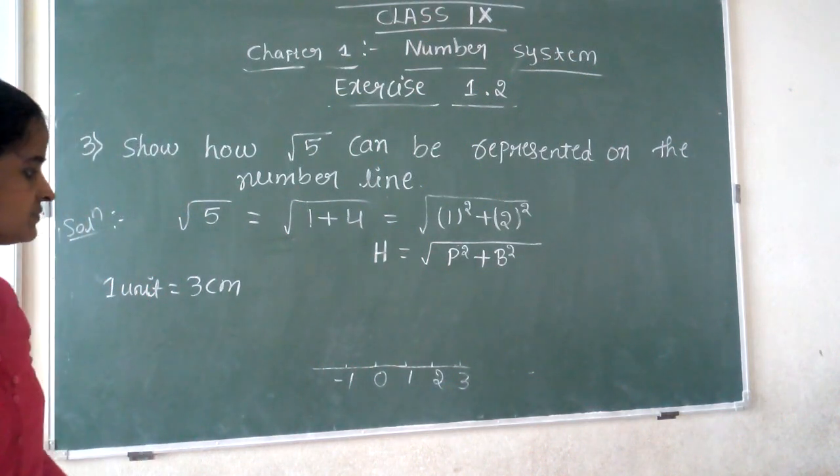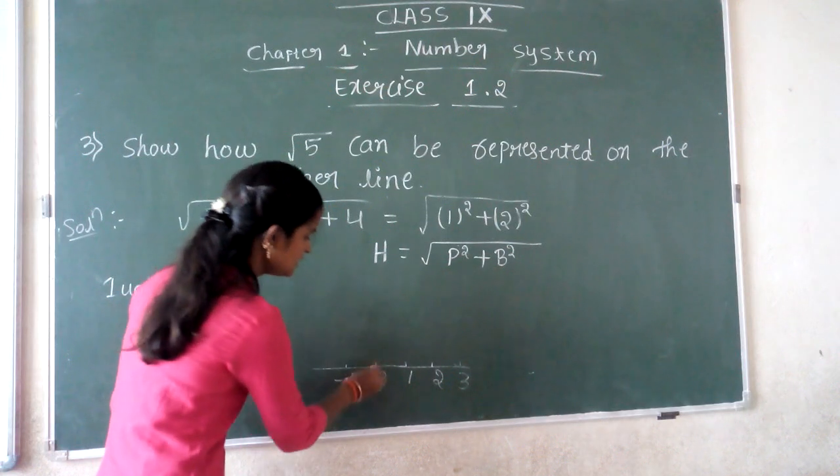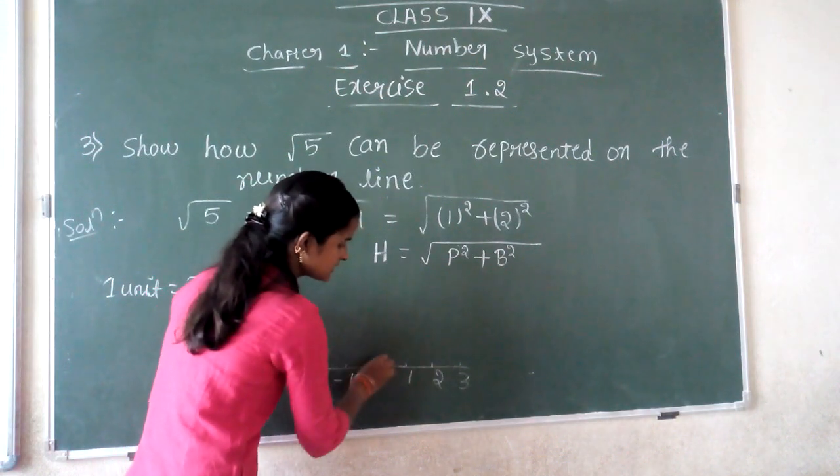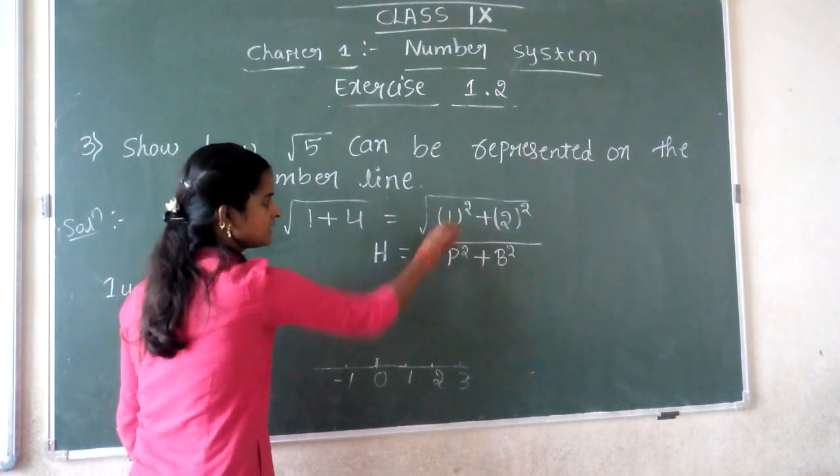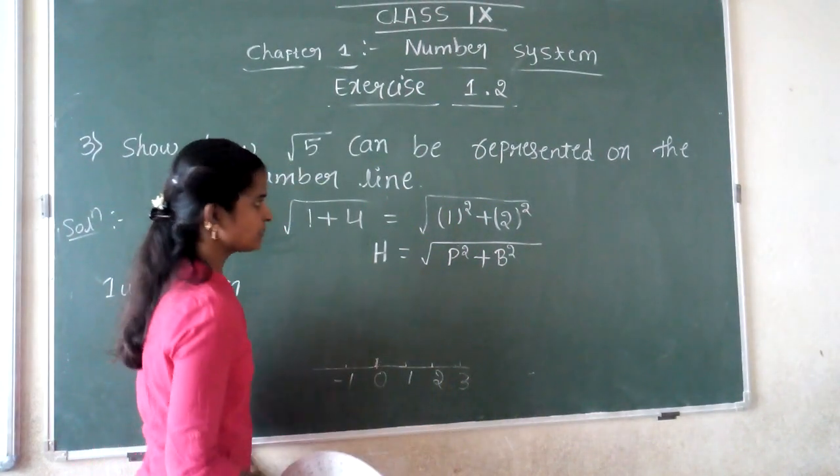You see here, the base is how much? The base is 2 cm, from 0 to 2. The height is 1 cm. Using a protractor, you have to draw a perpendicular line.